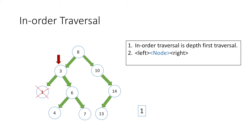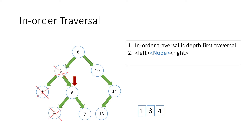Back at node 3, we have already traversed its left side, so we print the value 3 and mark it as traversed. According to the rule we move in the right direction to node 4. Since node 4 does not have a left child, we print its value which is 4 and mark it as traversed. As it also has no right child, we move up to node 6.